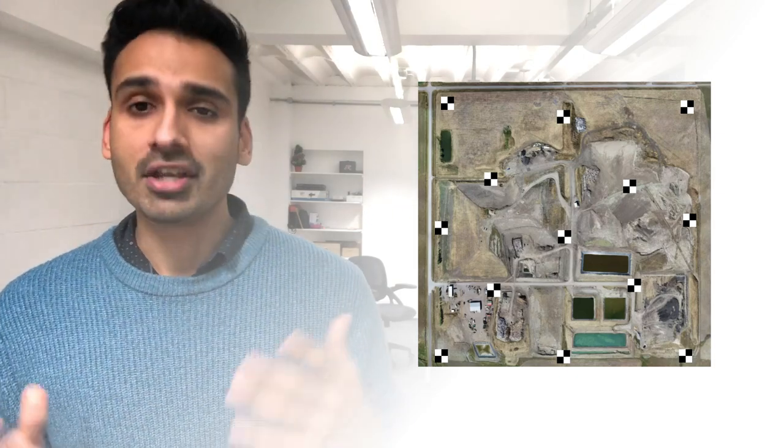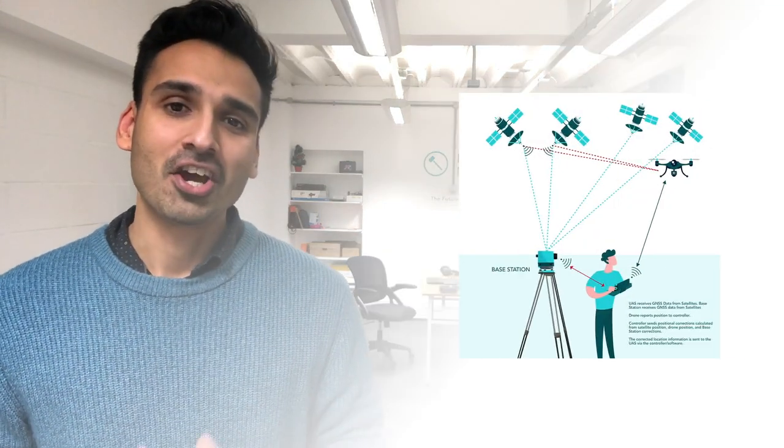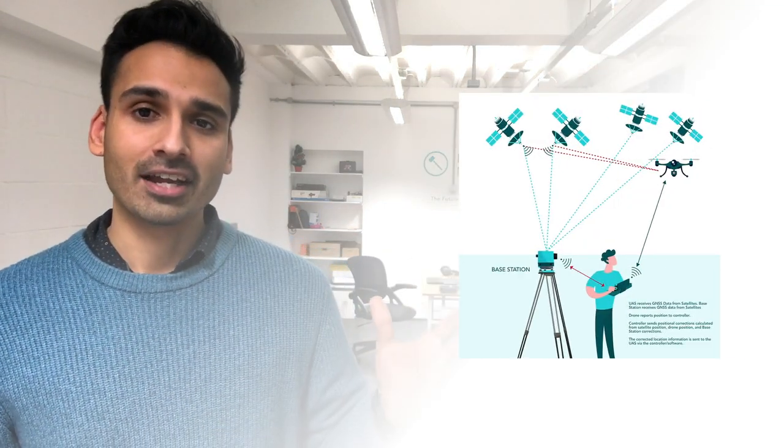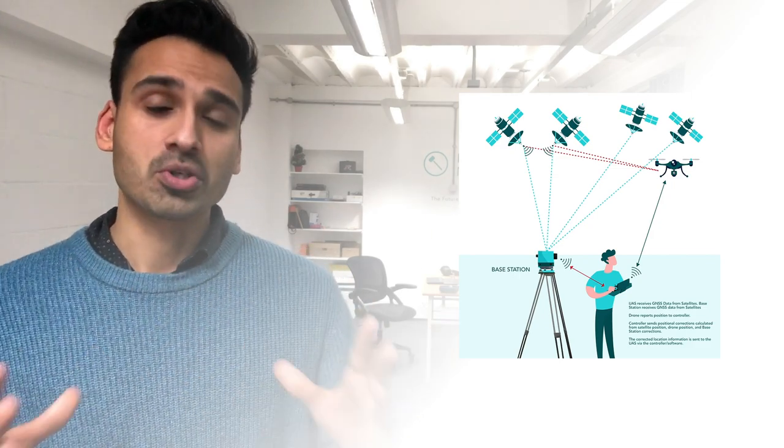Another method is RTK drones, which are essentially drones that have a special type of GNSS receiver — the RTK receiver — which works alongside a base station and allows you to triangulate the drone's actual location in 3D space using satellite data, as shown in this graphic.